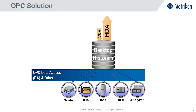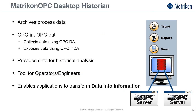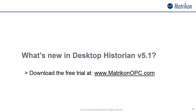This OPC solution allows for a much more open and less restrictive model. An example of an OPC-based data historian is the Matricon OPC Desktop Historian. It allows you to collect your real-time data via an OPC-DA server, and then expose the stored data using an OPC-HDA enabled tool, such as a trender or report package. This approach allows you to turn sometimes meaningless data into information. Recently, Matricon released Desktop Historian version 5.1. Let's take a look at some of the exciting new features that have been built onto an already great example of an OPC-based historian.